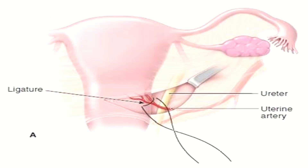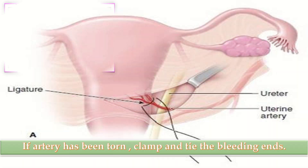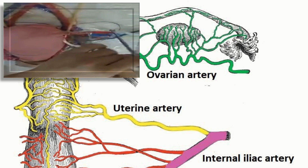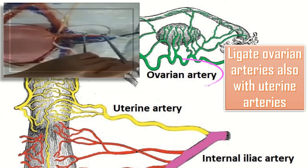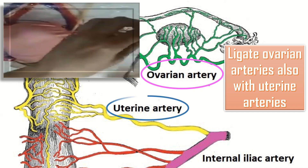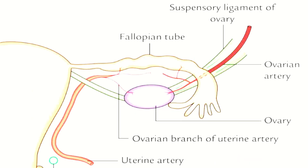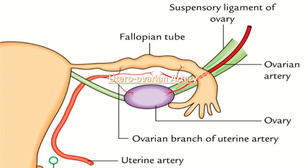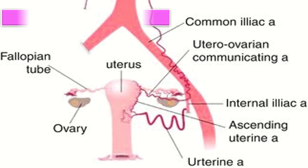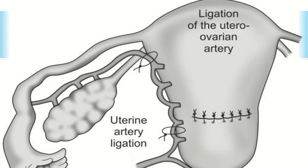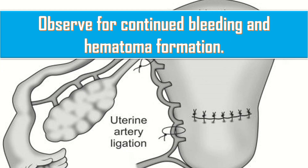If the artery has been torn, clamp and tie the bleeding ends. It is advisable to also ligate the ovarian arteries together with the uterine arteries because of anastomosis between the two. Ligate the utero-ovarian artery just below the point where the ovarian suspensory ligament joins the uterus. Repeat on the other side and observe for continued bleeding and hematoma formation.